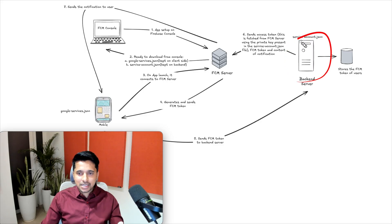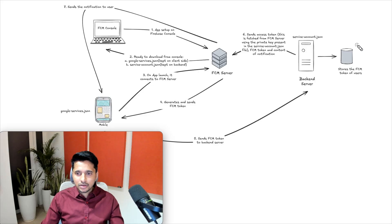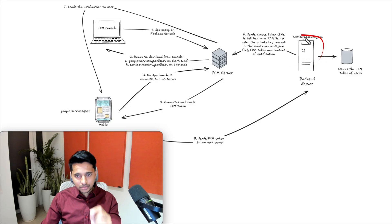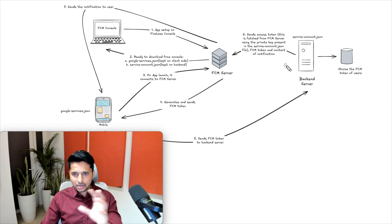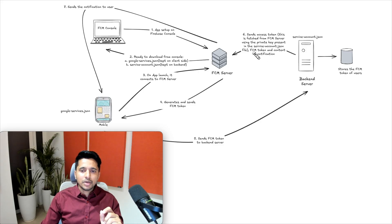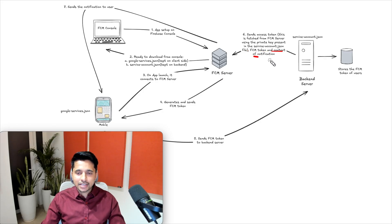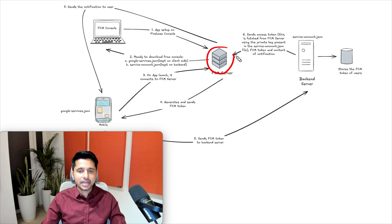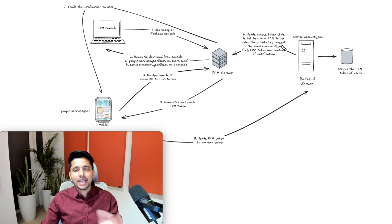The backend server gets the trigger that it needs to send a notification to a particular user — say user ID one. First, it retrieves the stored FCM token for that user. Then it prepares the notification content, such as 'someone commented on your post,' along with any extra data. In addition to the FCM token and content, we also need an access token to verify that this is our legitimate backend server — otherwise anyone could send arbitrary notifications to the FCM server.